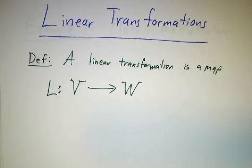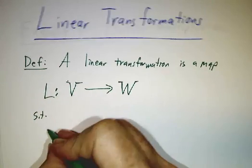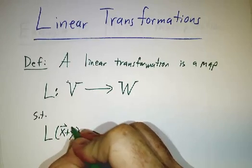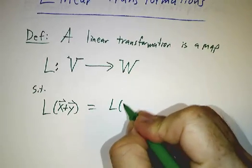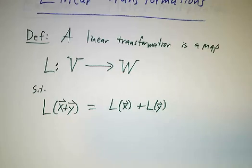The two things that vector spaces have going for them are that you're allowed to add things and you're allowed to take scalar multiples of them. So what we want is that if you add things and then apply the linear transformation, that should be the same thing as applying the linear transformation and then adding.